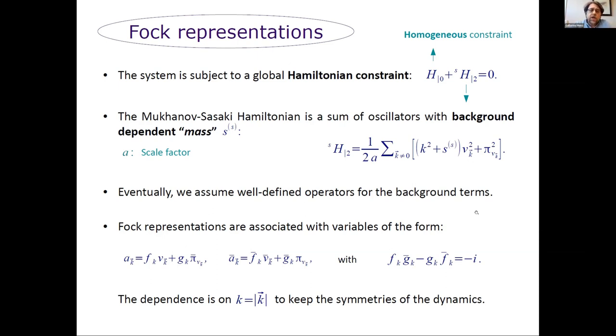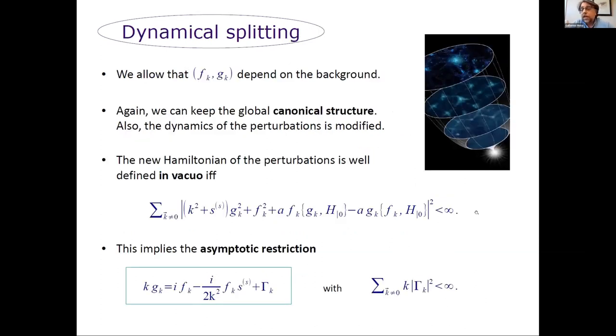So, at least in an algebraic approach, we are used to consider coefficients f and g that are constant. But on the other hand, from this extended context, it's natural to allow transformations to these annihilation and creation variables in which the coefficients may depend on the background. And this changes a little bit the rules of the game. So in particular, it's important for us that, as I said before, we're changing the dynamics of the perturbations. We get a new Hamiltonian, and we can ask that this Hamiltonian has especially nice properties.